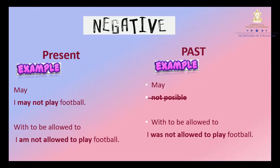Now, negative. In the present: 'I may not play football.' With 'to be allowed to': 'I am not allowed to play football.' In the past, it's not possible with may, but you can do it with 'to be allowed to': 'I was not allowed to play football.' Repeat: I may not play football. I am not allowed to play football. I was not allowed to play football. We change the verb to be to the past.